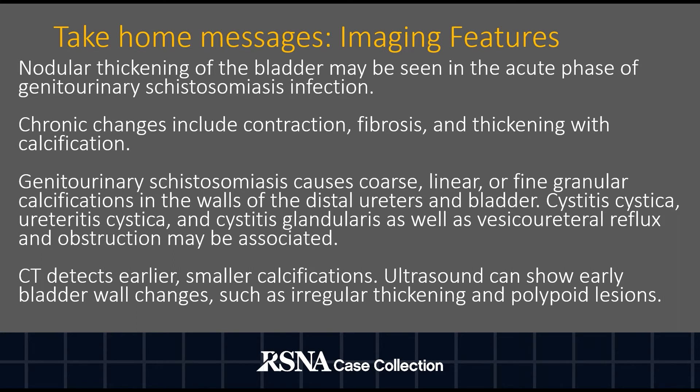Nodular thickening of the bladder may be seen in the acute phase of genitourinary schistosomiasis infection. Chronic changes include contraction, fibrosis, and thickening with calcification. Genitourinary schistosomiasis causes coarse, linear, or fine granular calcifications in the walls of the distal ureters and bladder. Cystitis cystica, ureteritis cystica, and cystitis glandularis, as well as vesicoureteral reflux and obstruction, may be associated.